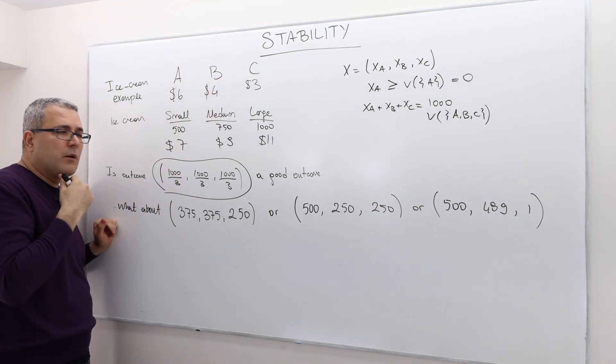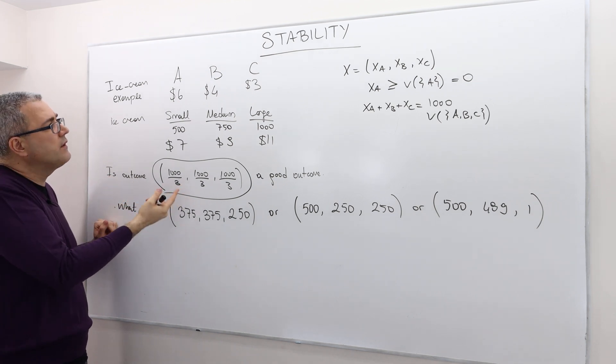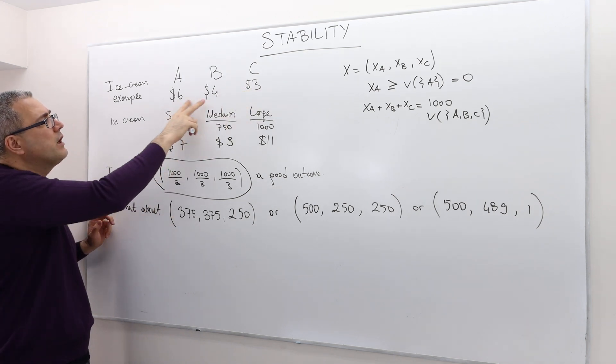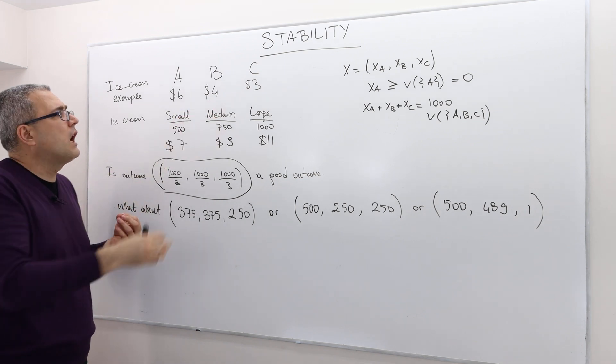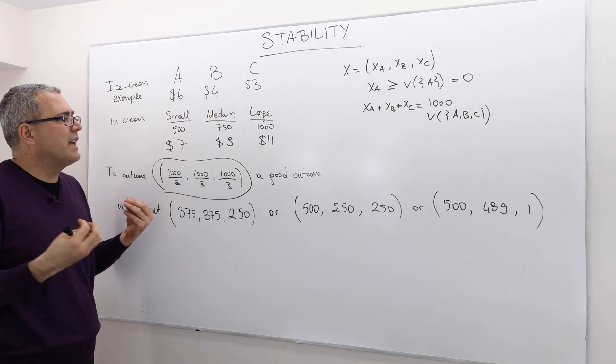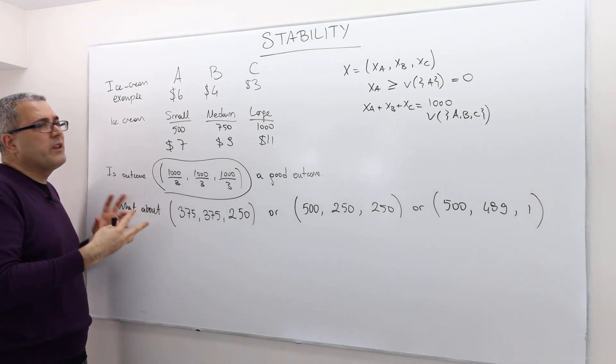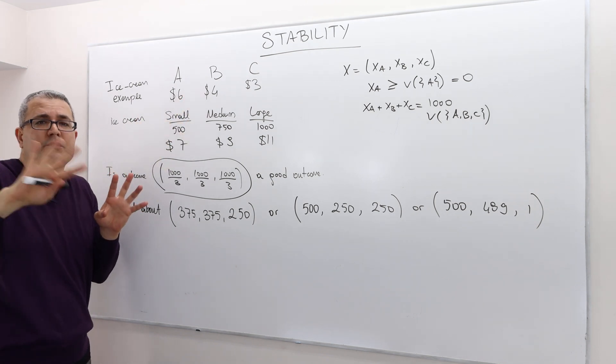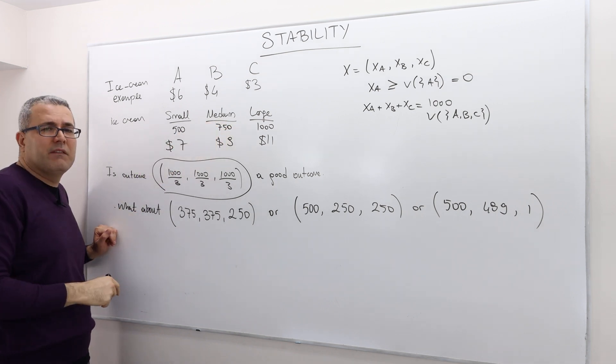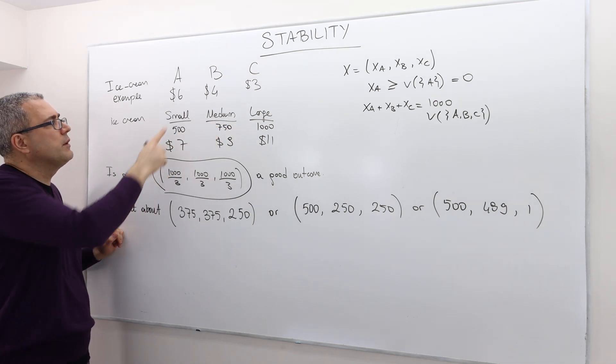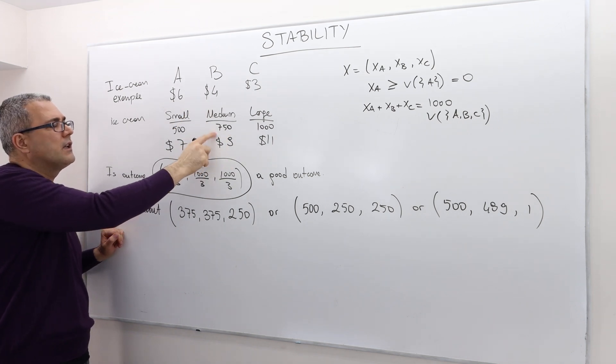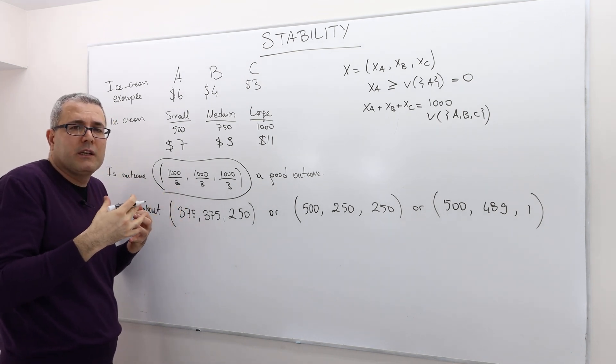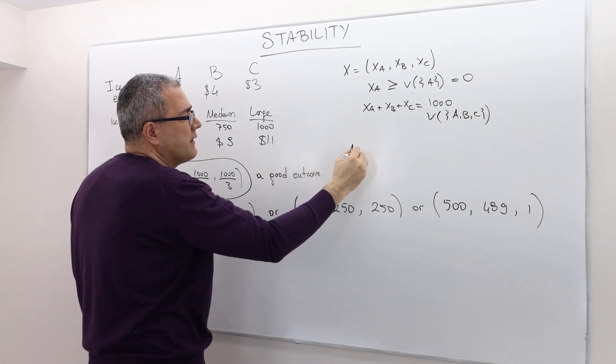But the thing is, player A and B can actually object to this. Well, why? Well, because they can argue against player C that, look, we are already chipping in a lot of our money, like $6 plus $4, $10. And with our collective contribution, we could actually, if we exclude you, C, we can end up getting 750 grams, the medium ice cream, right? Because with $10, they can afford the $9 medium ice cream. And so A and B can actually form a coalition by excluding player C.